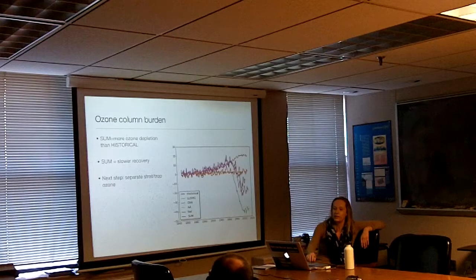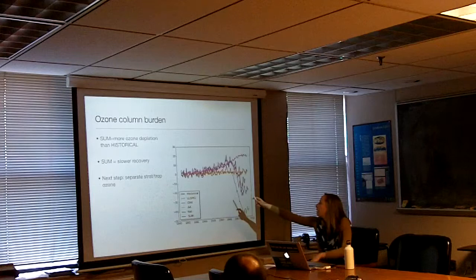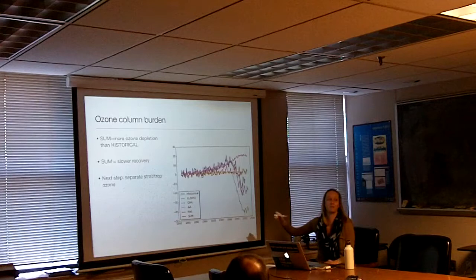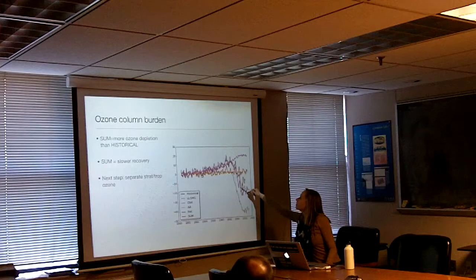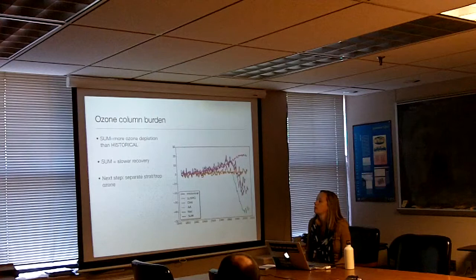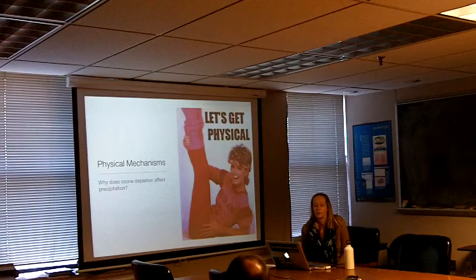This is the ozone column burden. The black is the historical; this is the long-lived greenhouse gas run. In the sum, you get more ozone depletion than in the historical, and a much slower recovery in the sum. The next step is to separate what's going on in the stratosphere from what's going on in the troposphere, to really separate out what's happening with ozone.